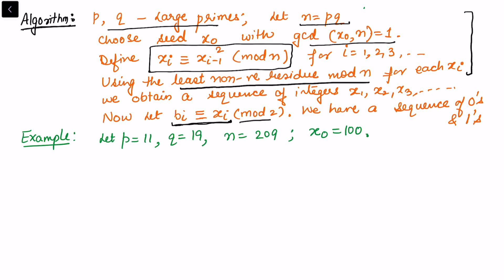least non-negative residue as either 0 or 1. So that will give us the sequence of 0s and 1s. Now in this example p is equal to 11, q is 19, and n is 11 times 19, that